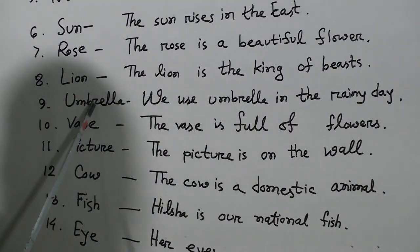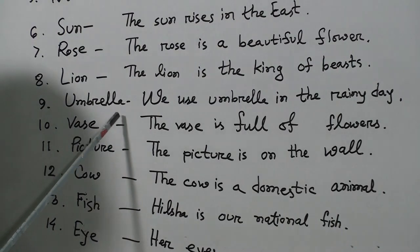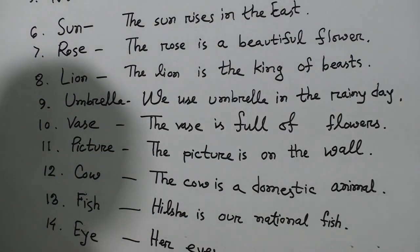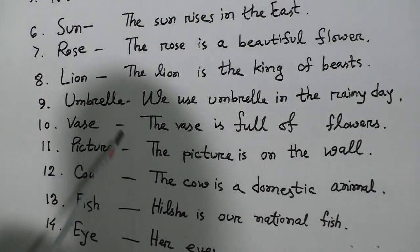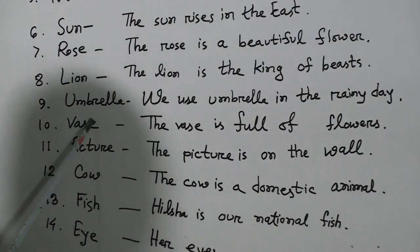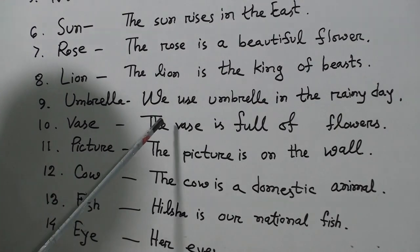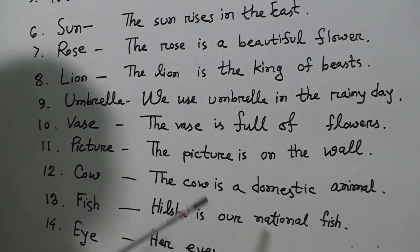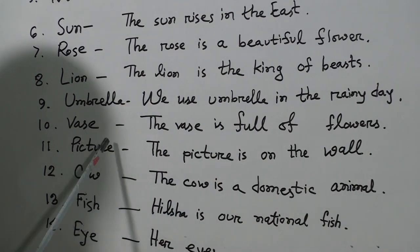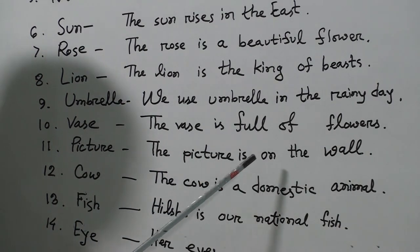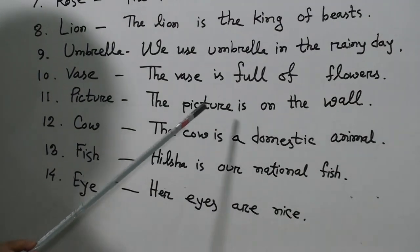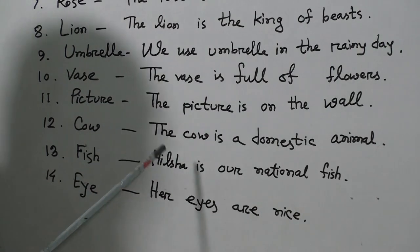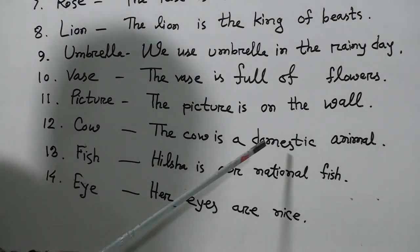Umbrella. Umbrella māne hauché chāta. We use an umbrella on a rainy day. The cow is a domestic animal.